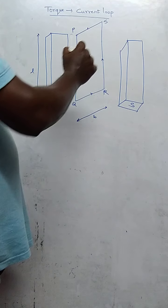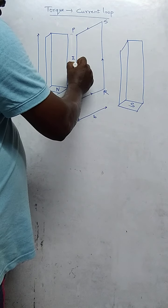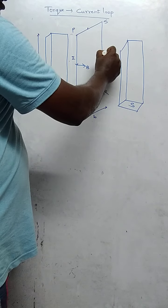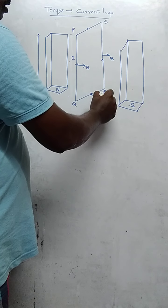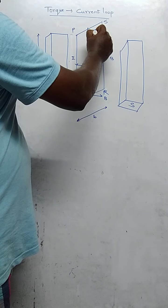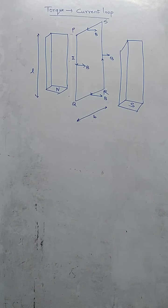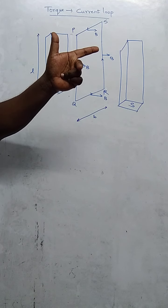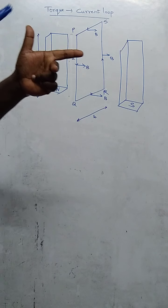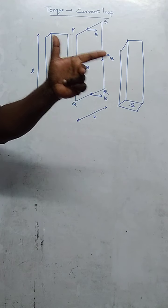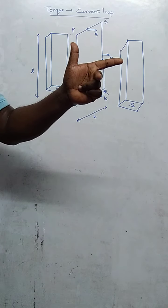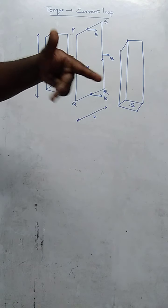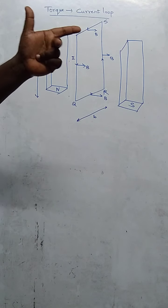At this point there is a magnetic field acting in the positive x-axis. The normal field will be acting here in this direction, and here also the normal field will be acting in that direction. According to Fleming's left-hand rule, for the four segments we can find out the force. Keep the thumb, forefinger, and middle finger mutually perpendicular to each other. The thumb indicates the direction of the force F, the forefinger indicates the magnetic field B, and the middle finger indicates the direction of the current.